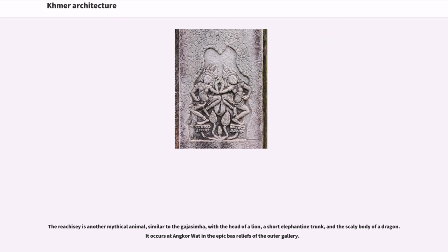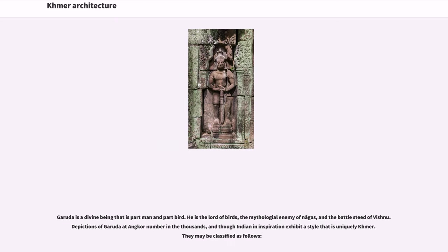The Rajasiha is another mythical animal, similar to the Gajasimha, with the head of a lion, a short elephantine trunk, and the scaly body of a dragon. It occurs at Angkor Wat in the epic bas-reliefs of the outer gallery. Garuda is a divine being that is part man and part bird — the lord of birds, the mythological enemy of Nagas, and the battle steed of Vishnu. Depictions of Garuda at Angkor number in the thousands, and though Indian in inspiration, exhibit a style that is uniquely Khmer.